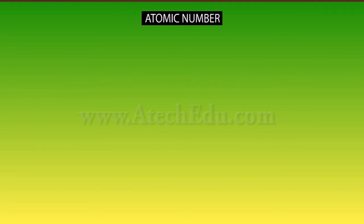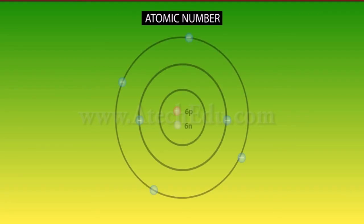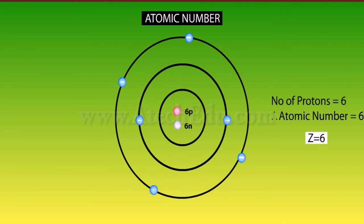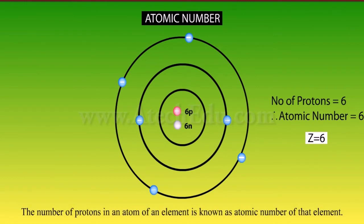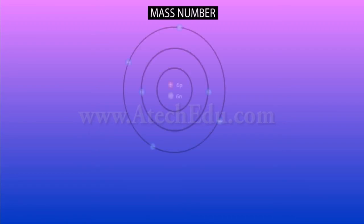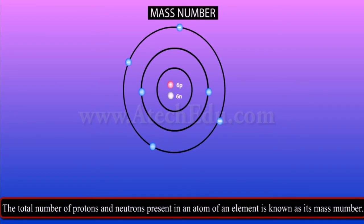The number of protons in an atom of an element is known as the atomic number of that element, denoted by Z. For example, in carbon the number of protons is six, hence the atomic number is six. The total number of protons and neutrons present in an atom is known as its mass number.